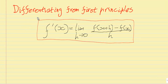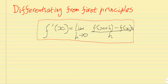This is just a quick tutorial on how to differentiate a polynomial function from first principles. First principles means we don't get to use our nice little shortcut — we have to use this ugly little formula here. f'(x), which means the first derivative of f with respect to x, equals the limit as h approaches 0 of f(x+h) minus f(x) over h.